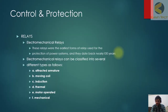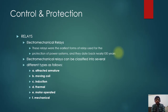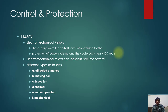Welcome. We will start and move to our new topic which is control and protection systems. We will start with relays. There are different types of relays. One type we will start with is electromechanical relays. These were the earliest form of relay used for the protection of power systems and they dated back nearly a hundred years.